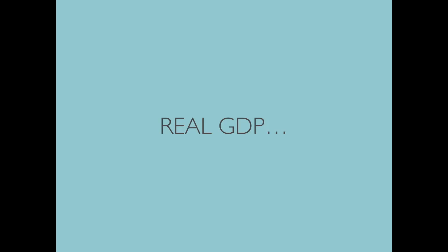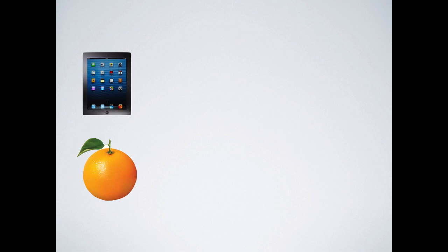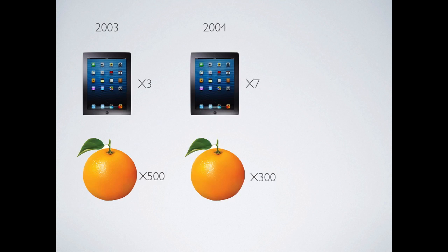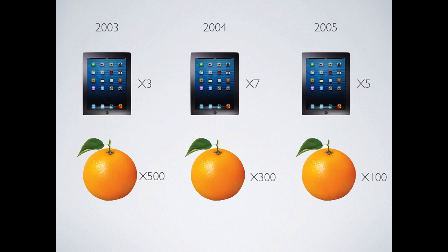Now we have learned how to calculate GDP value. It's time to move on to calculate its real term. Real GDP is the measurement we use to measure the true production activity in an economy. For example, suppose the economy only produces two types of goods: iPad and orange. In 2003, the economy produces three iPads and 500 oranges. In 2004, there are seven iPads and 300 oranges. And in 2005, five iPads and 100 oranges. Which year has the most production? It is really hard to tell because more than one type of good is being produced. One way to look at the production level is through nominal value — nominal GDP.